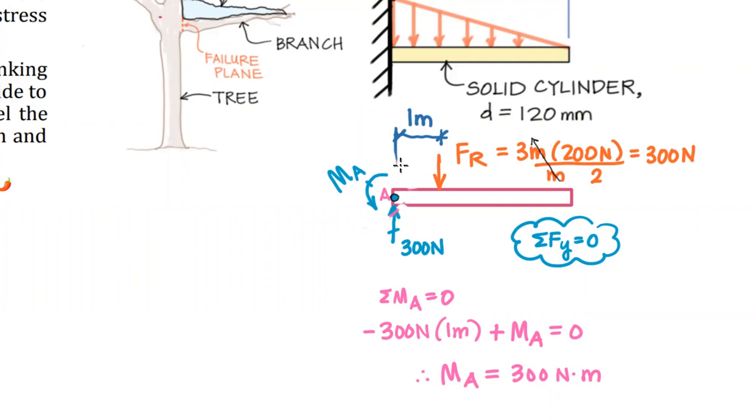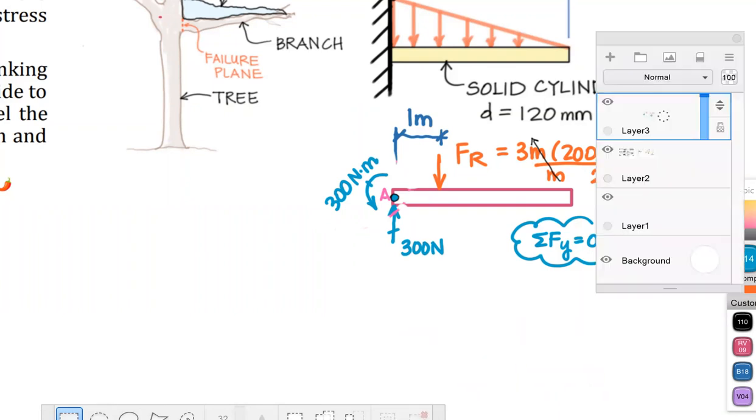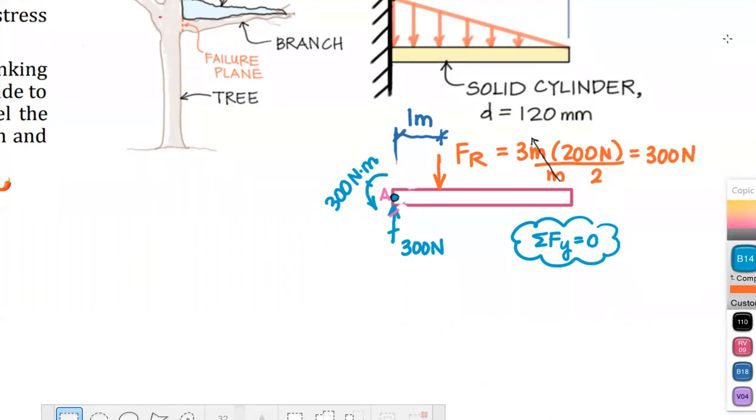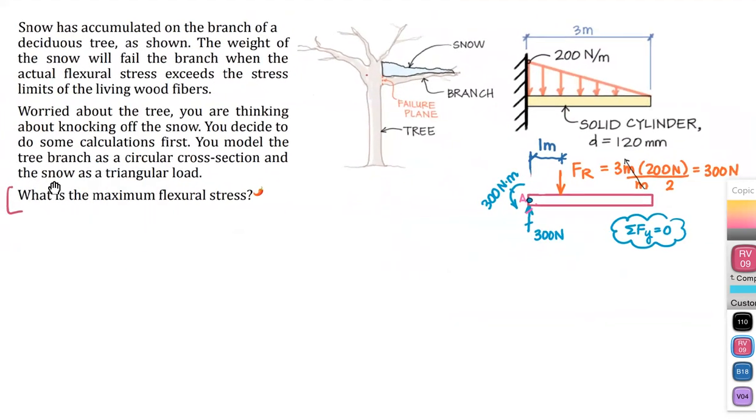I'm just going to swap that moment out here for M sub A and just type in 300 newtons times meters. We've got our reactions all figured out. Let's take a look back at the landscape of the problem and see what our next step is.